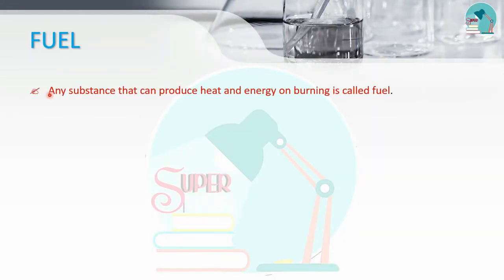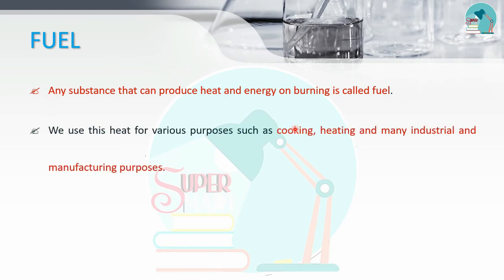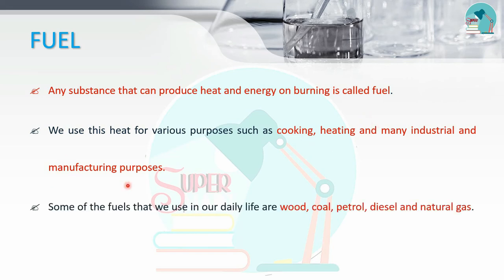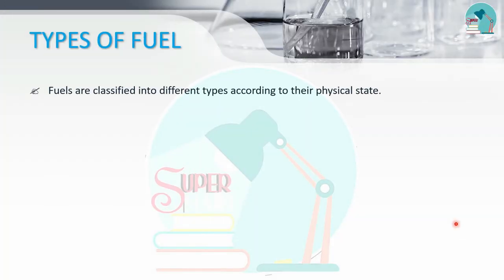Fuel is a substance that when burned produces heat. It is used for cooking, heating, and manufacturing. Common fuels include wood, coal, petrol, diesel, and natural gas. There are different types of fuels classified by their physical states: solid fuel, liquid fuel, and gaseous fuel.